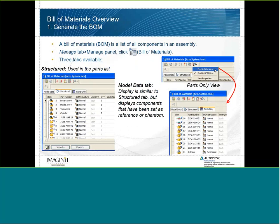When we go into our Bill of Materials command, we have three tabs available: the Model Data tab, which is essentially the same information you'd find in your model browser; the Structure tab, where we're going to spend a lot of time; and a Parts Only tab. The Parts Only tab is commonly used if you do stick frame steel and don't care about sub-assemblies at all. These tabs are not turned on by default unless you've turned them on in your templates, so you might have to right-click to enable the bottom view.